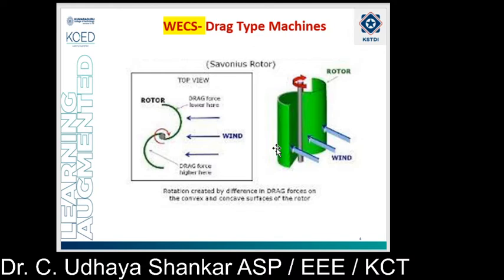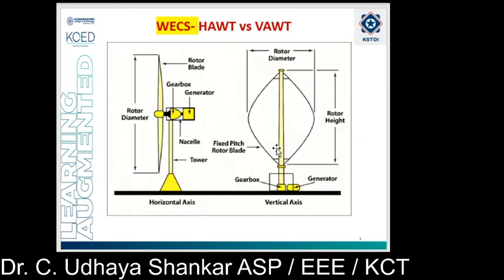The Savonius rotor, having a solidity of unity, is more suitable for even very low wind speed applications. But the problem is the tip speed ratio is only 1, so the energy extraction from the wind is very much less compared to three-blade and two-blade structures. Many researchers are working on the Savonius rotor. Now we will discuss the difference between horizontal axis wind turbine and vertical axis wind turbine.